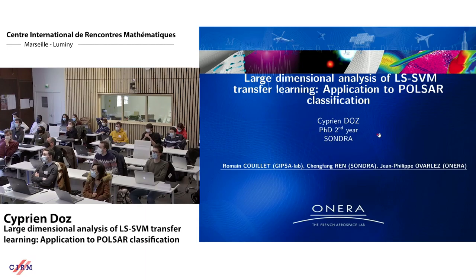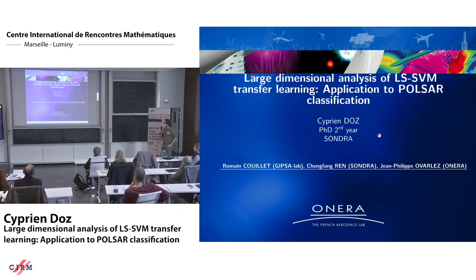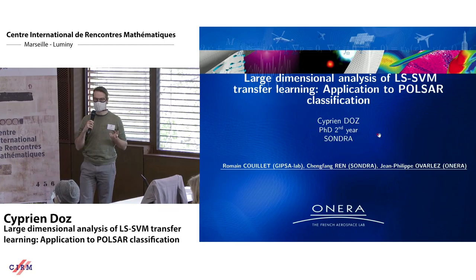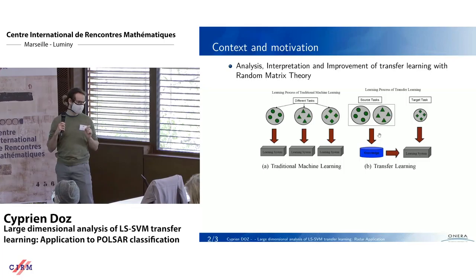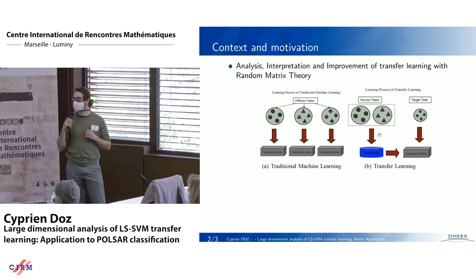I will present a theoretical study for large-dimensional transfer learning with a potential application to radar image classification. This work has two objectives: to understand theoretically the mechanism of transfer learning in a large-dimensional setup, and to apply it to radar data that requires performance guarantees more than just absolute performance. The tools we use come from random matrix theory, which allows us to obtain asymptotic performance in a double asymptotic regime.